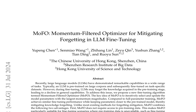The authors begin by discussing the limitations of existing optimizers, such as SGD and Atom, which can exacerbate forgetting due to their lack of consideration for the model's pre-training task. They then introduce the concept of momentum-filtered optimization, which aims to balance the model's updates between the pre-training and fine-tuning tasks.